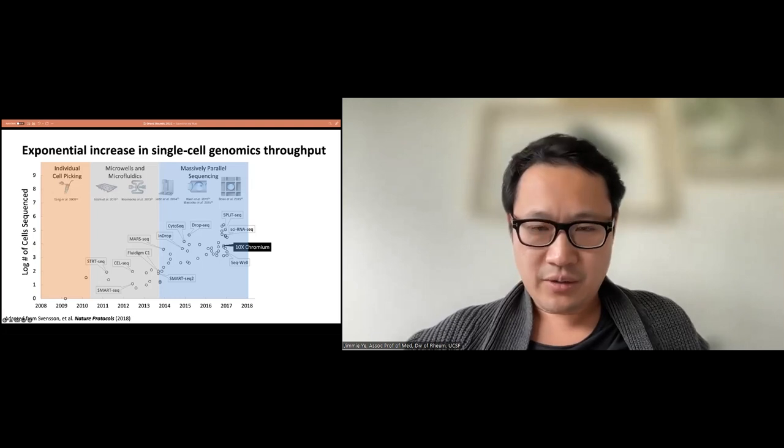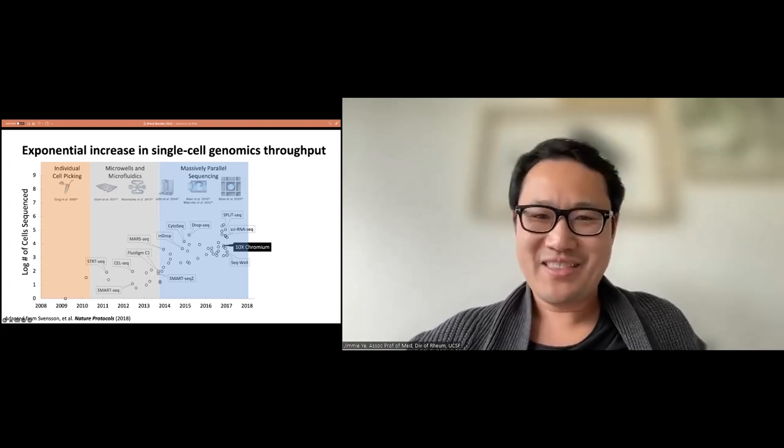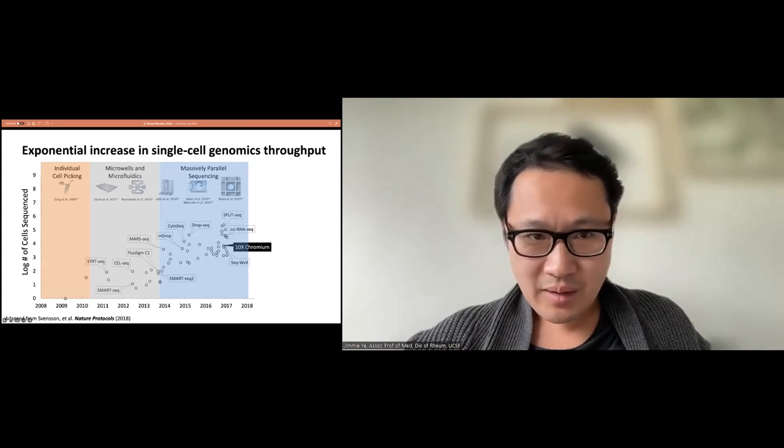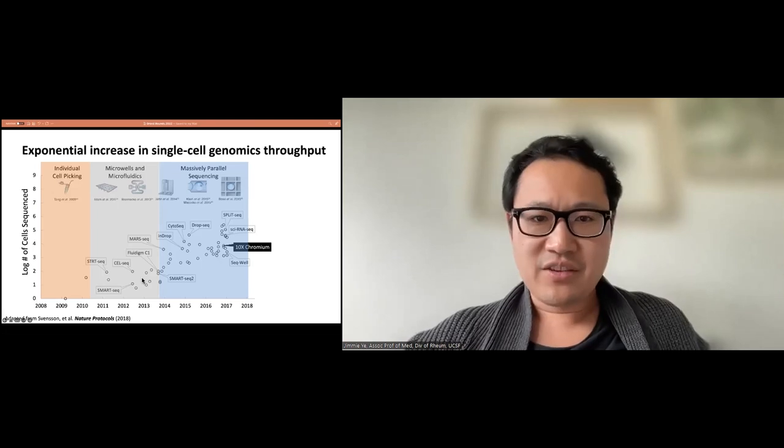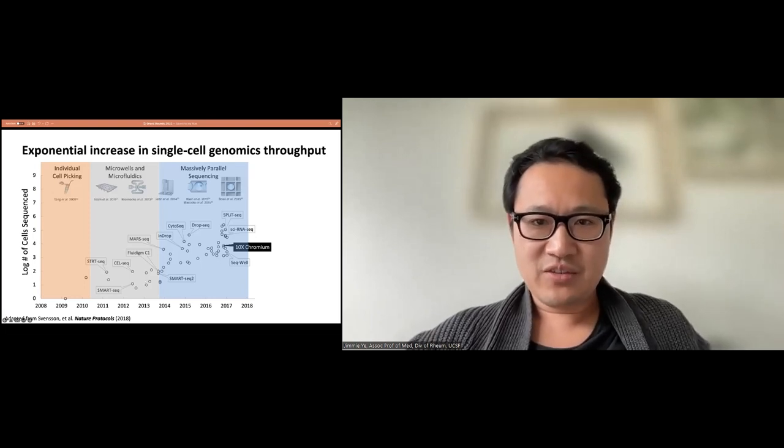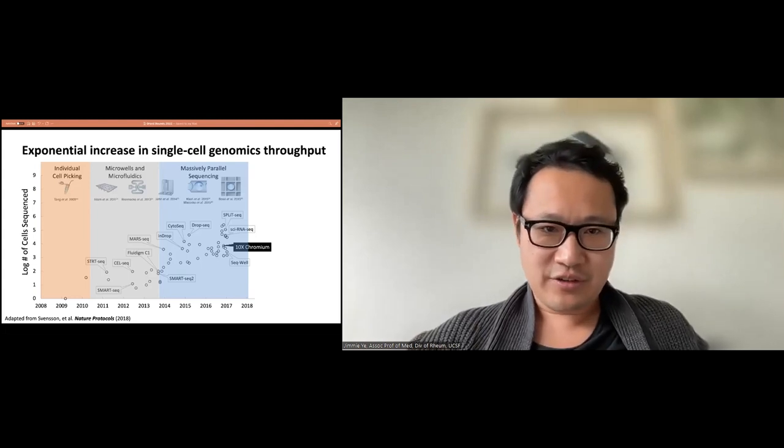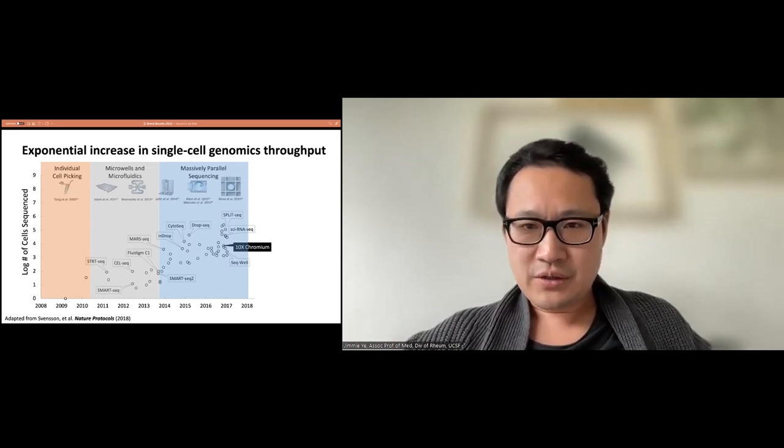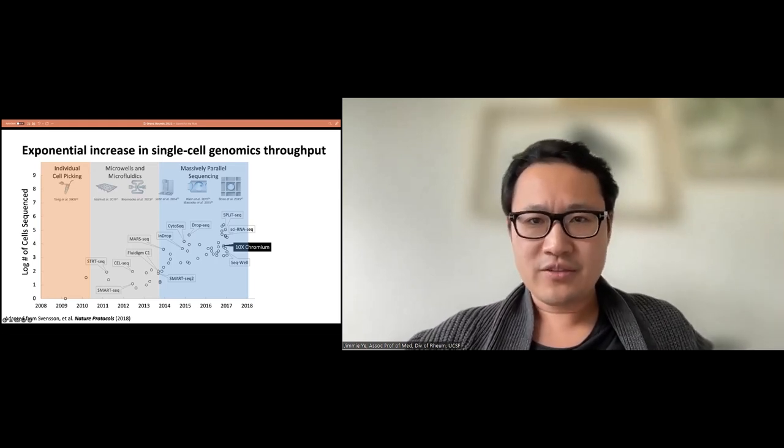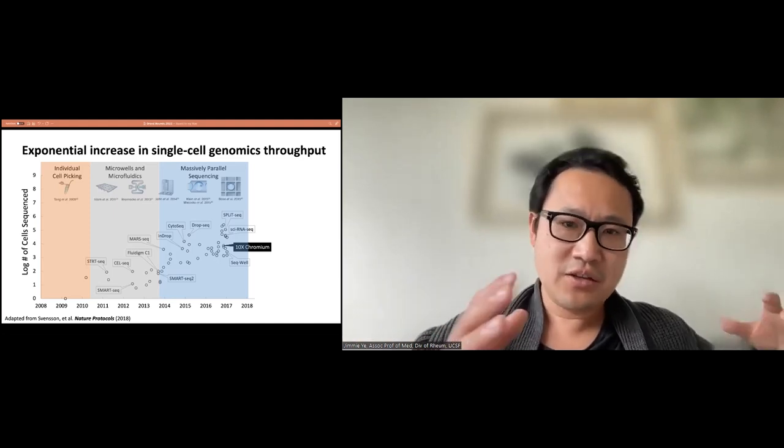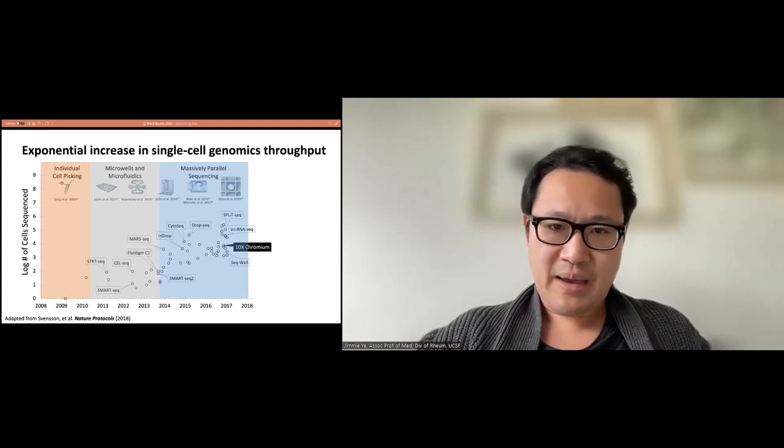I'd like to start with this slide that I show a lot of my first-year graduate students. This is reminiscent of what happened with genome sequencing, where we have on the x-axis time, and on the y-axis the number of cells that's been sequenced by the community. On the y-axis is a logarithmic axis, which means there's been this increasing exponential growth in the throughput of single-cell genomics. Whenever you see something like this, it's almost always driven by technological advances. I highlighted three different technologies that emerged over the past 12 years.